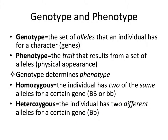Genotype is the alleles that a person has — the actual genetic information inside their genes. Phenotype is the trait that a person has, often their physical appearance. For example, your eye color is your phenotype. Genotype determines phenotype. Homozygous means an individual has two of the same alleles for a certain gene — for example, two capital B's or two lowercase b's. Heterozygous means an individual has two different alleles for a gene — one dominant and one recessive.